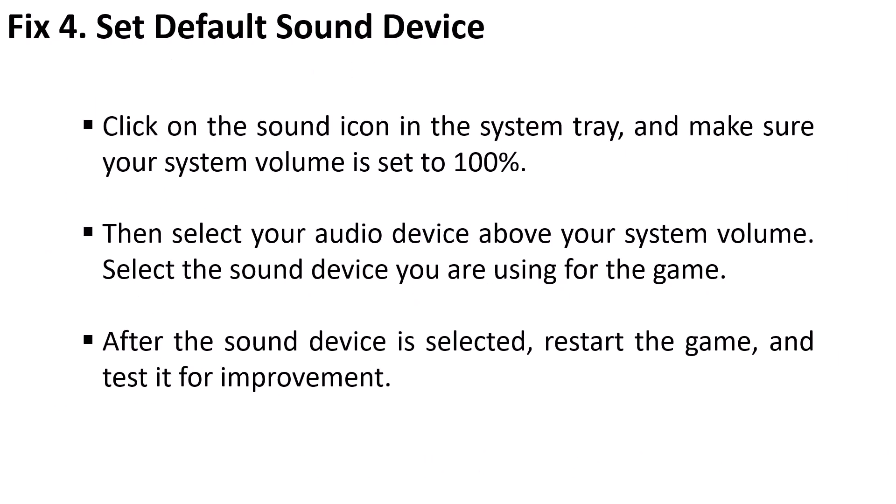Fix 4: Set default sound device. Click on the sound icon in the system tray and make sure your system volume is set to 100%. Then select your audio device above your system volume, and select the sound device you are using for the game. After the sound device is selected, restart the game and check if your problem is solved.